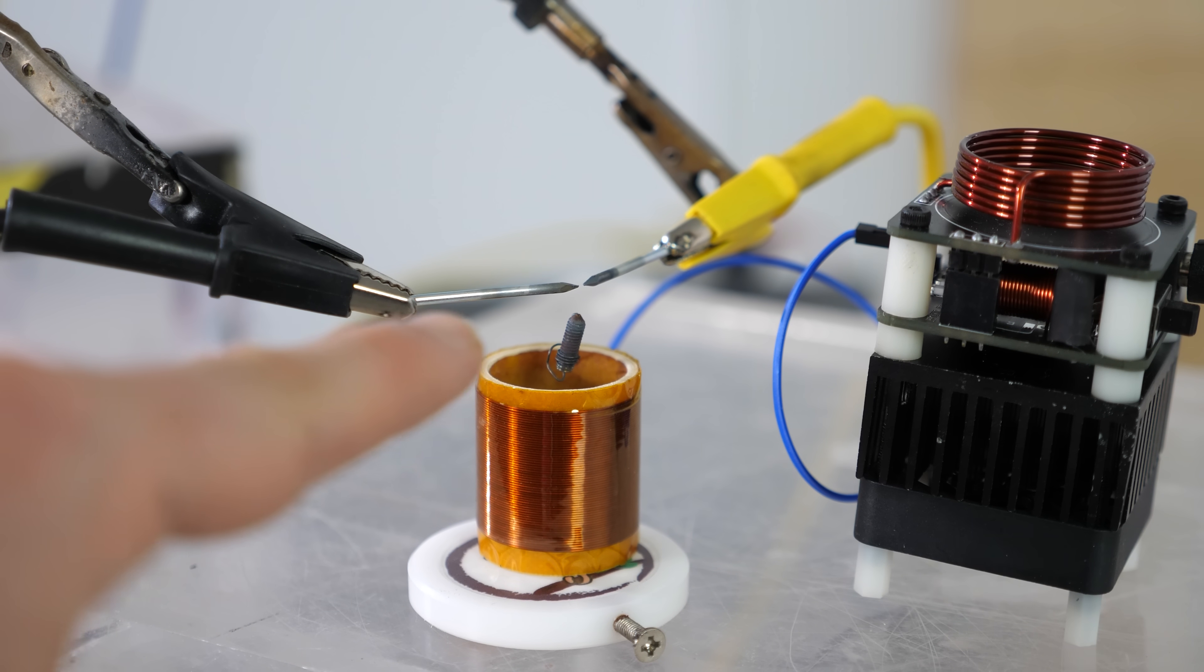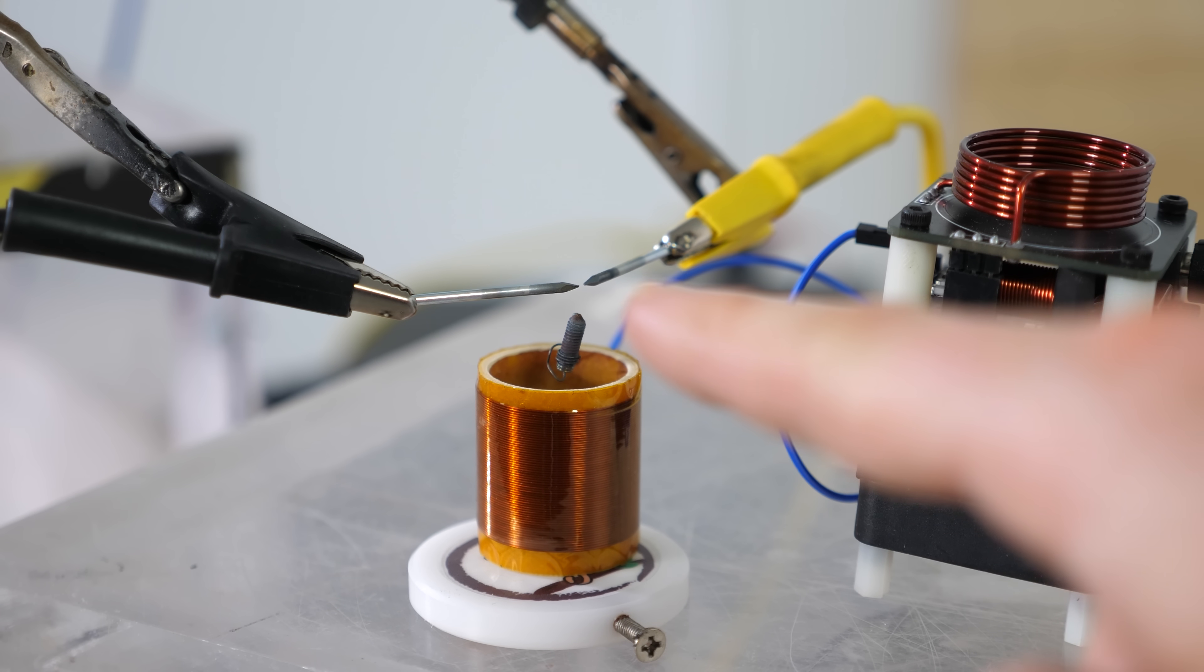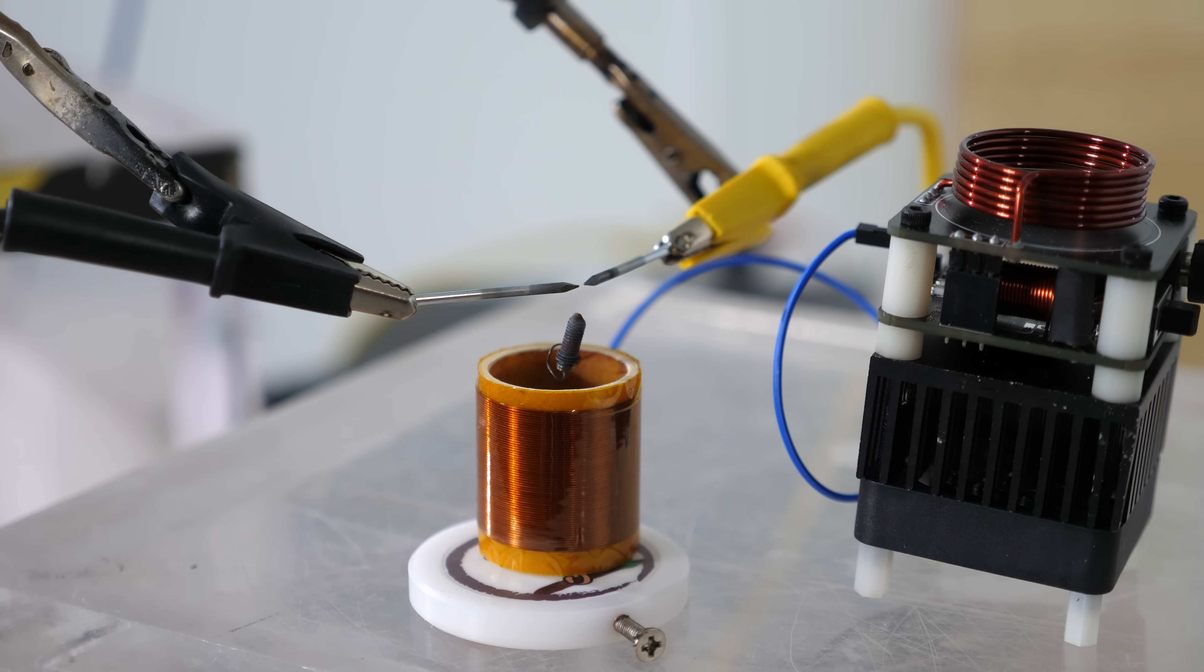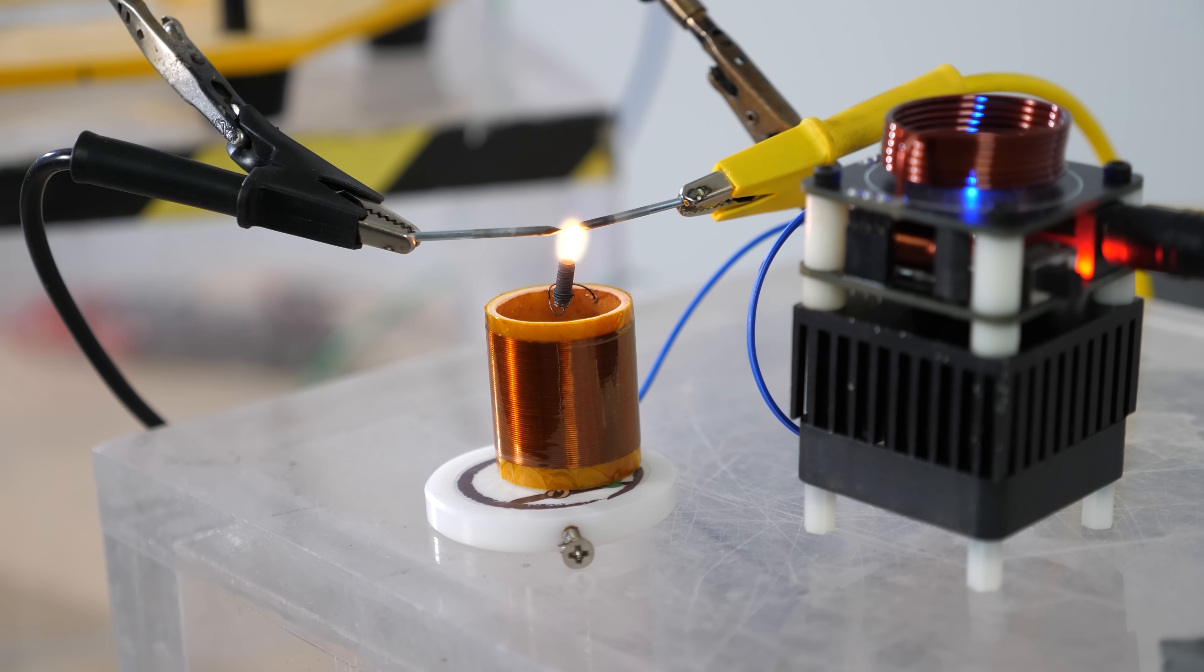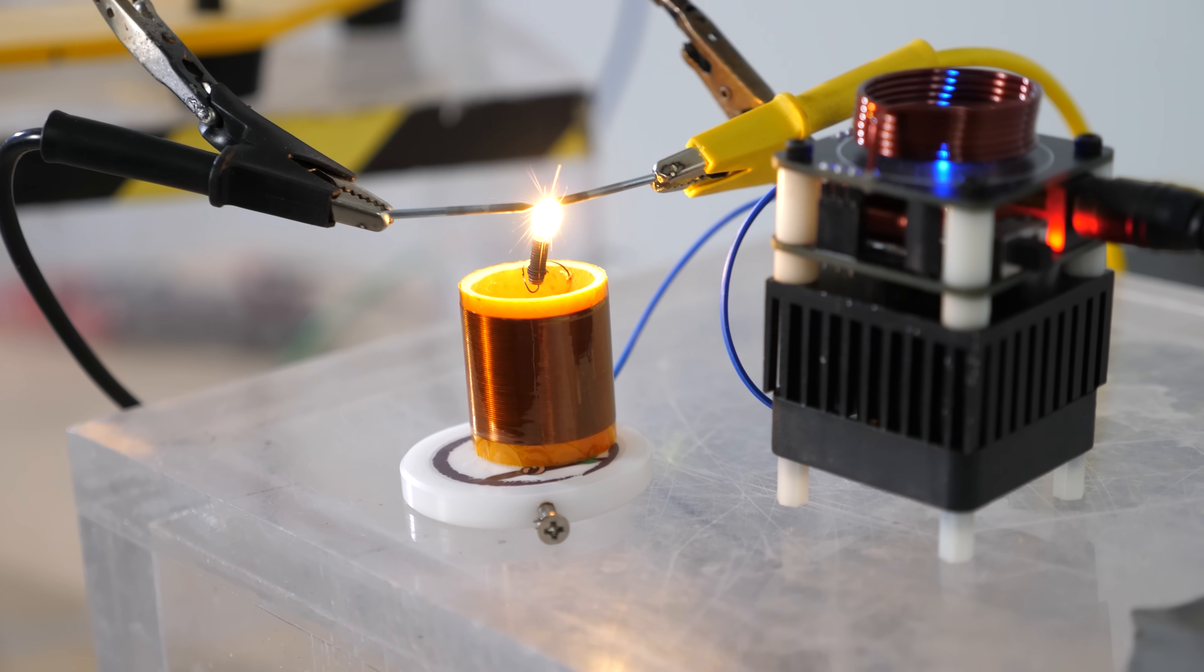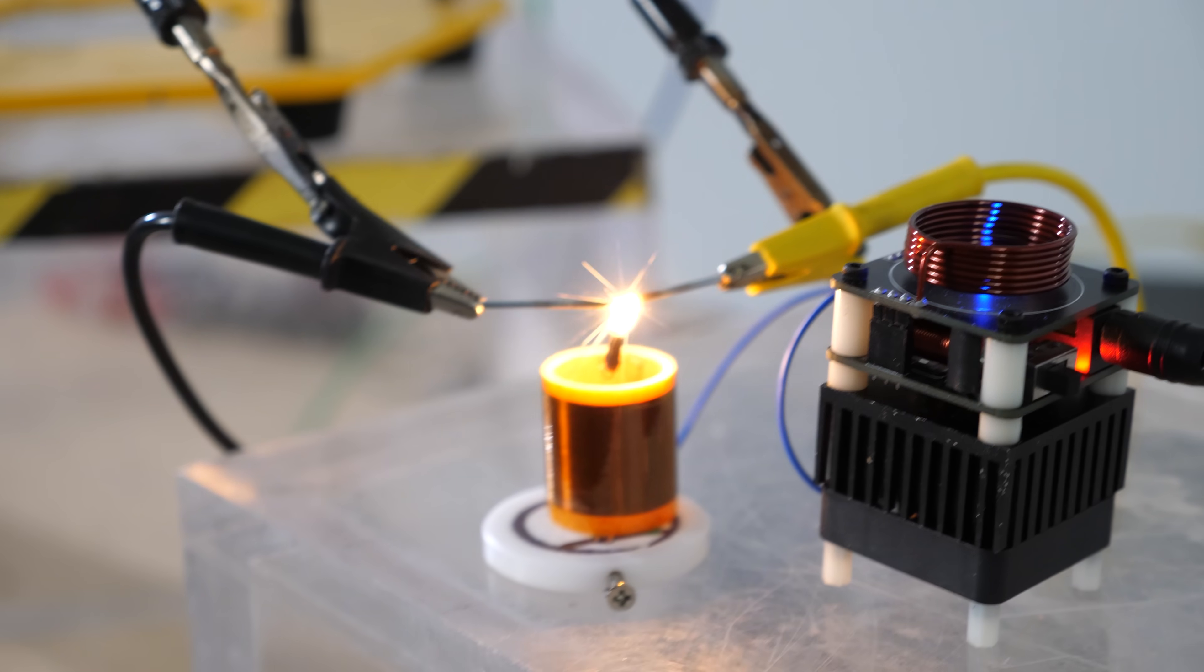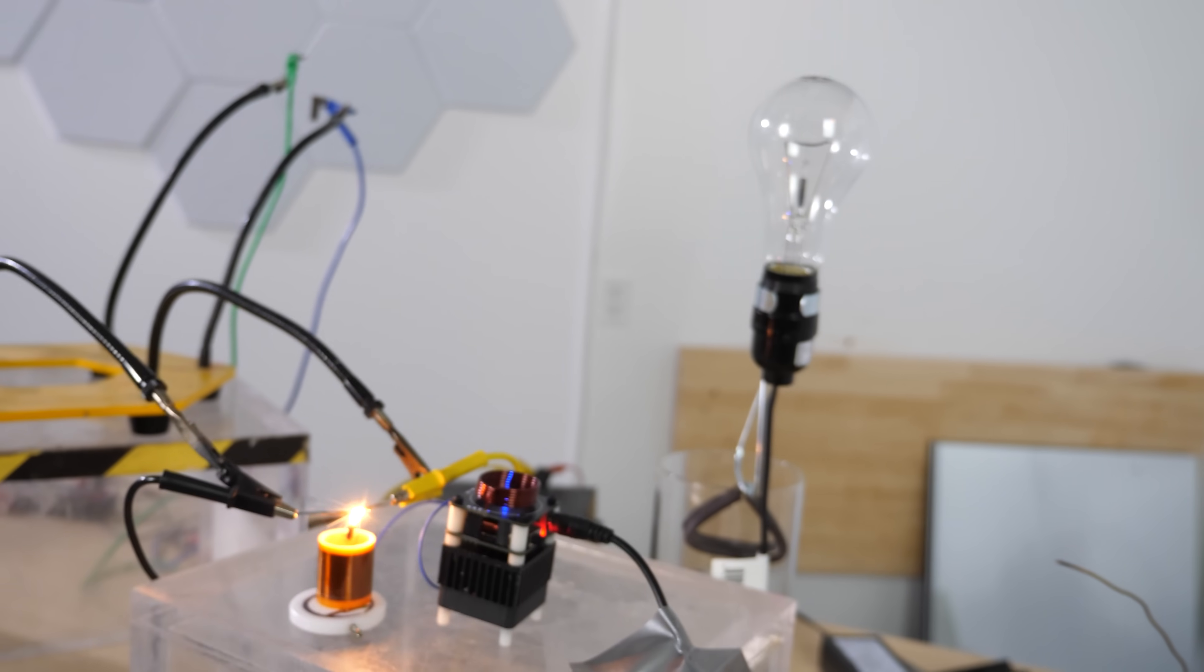So you can see there's only a tiny gap between those electrodes now. Now let's strike the plasma and see if it can complete that gap. Nope. So the plasma is forming in between them. But look at that. The light bulb is off.